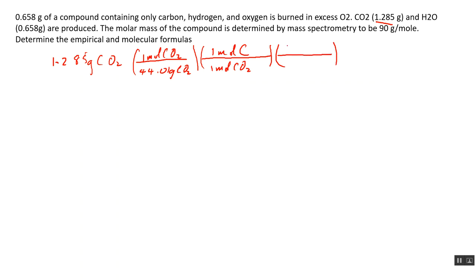Then we convert from moles to grams using the molar mass of carbon — 12.01 grams of carbon per one mole of carbon, which you can get from the periodic table. When I did this calculation, the answer I got is 0.3507 grams of carbon.